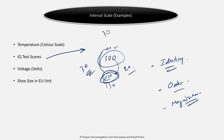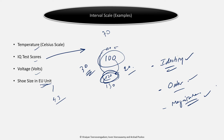Other examples of interval scale include temperature, voltage, and shoe size. For example, my shoe size is 43 — that's an actual number representing something. When you go to a shop and say your shoe size is 38, the person understands exactly what that means. It provides identity, order, and magnitude. If your friend's shoe size is 40, you can say their shoe size is bigger than yours by 2, and that means something.